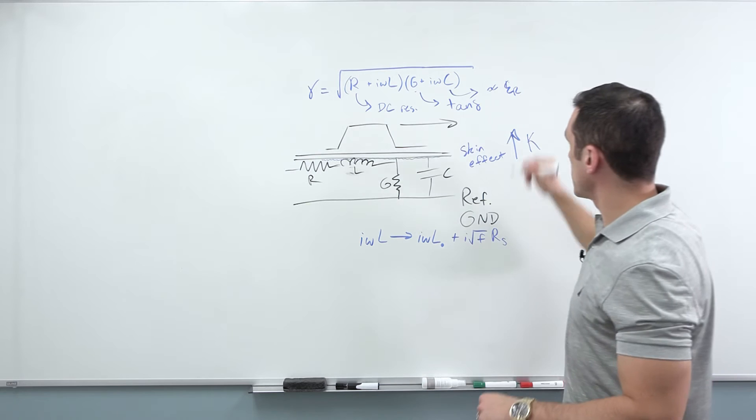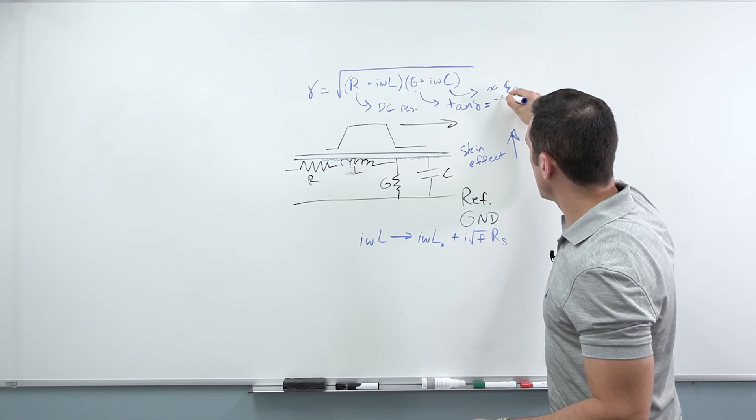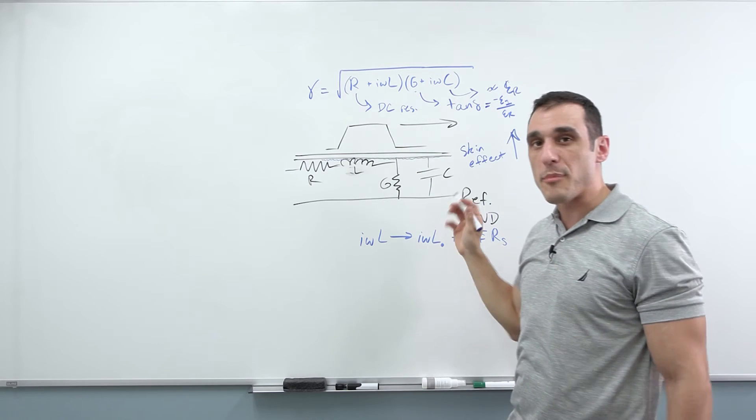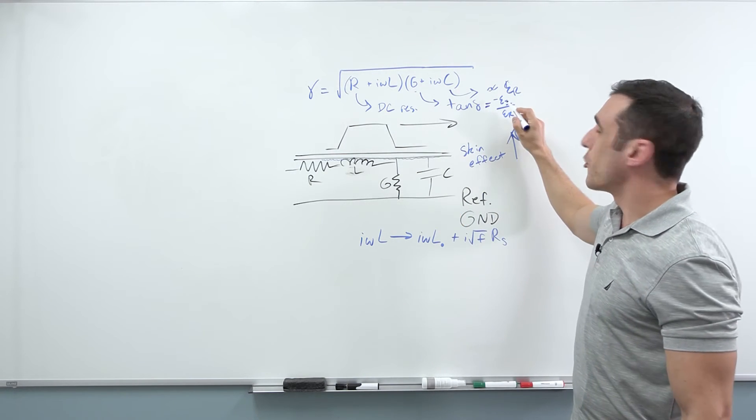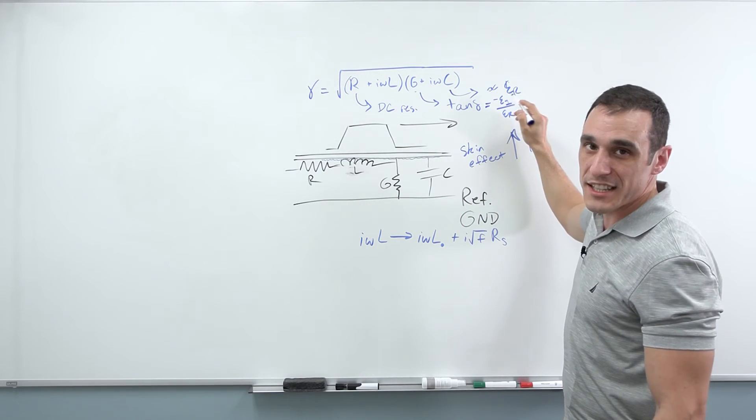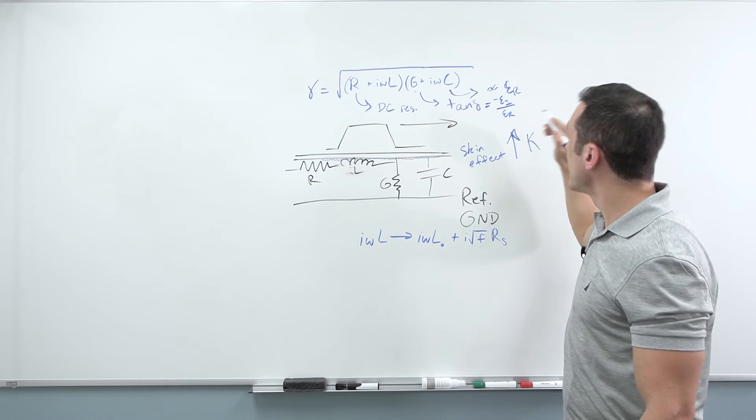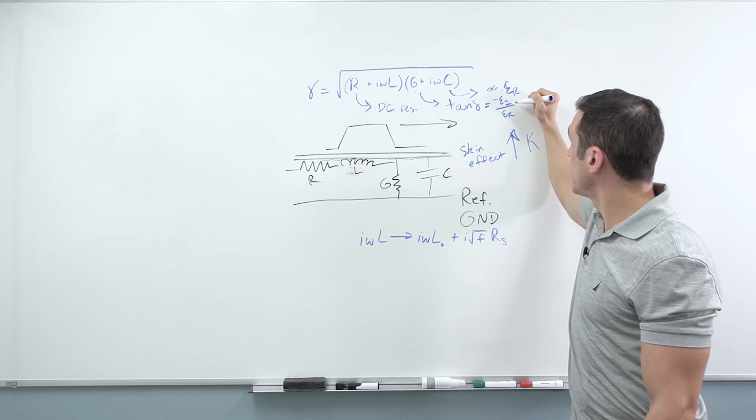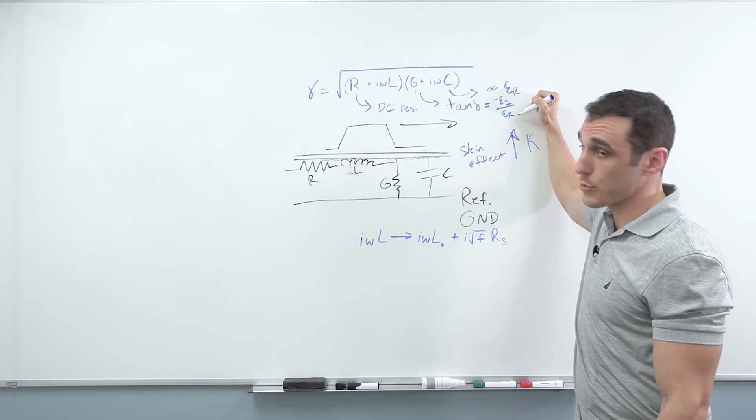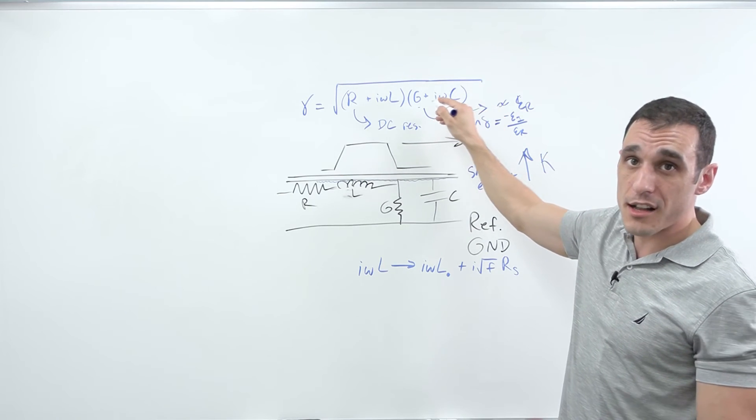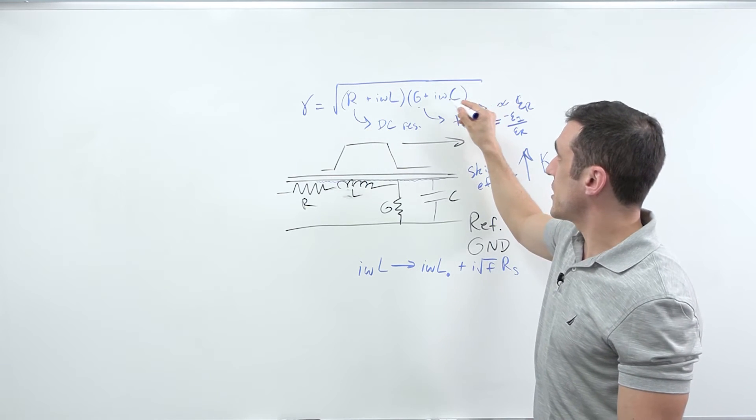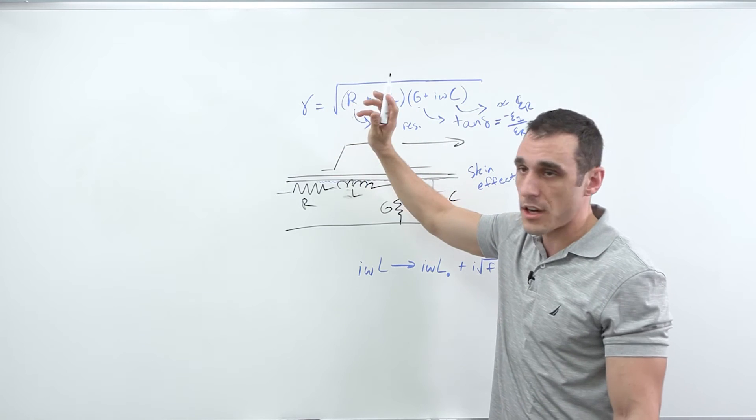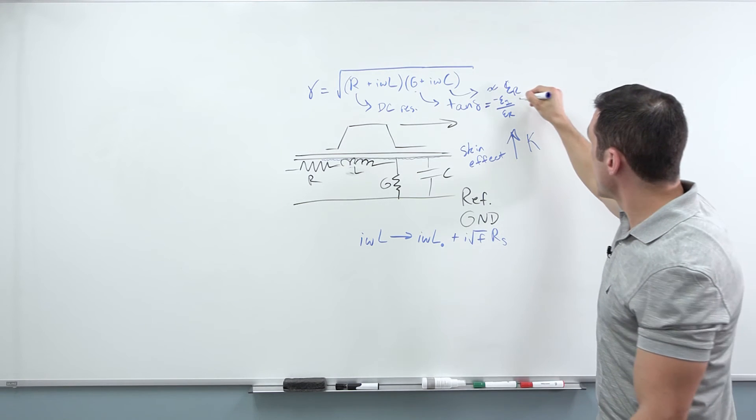So if you remember my previous video, I don't know why electrical engineers keep emitting this negative sign, but this negative sign has to be here. It is proportional to the negative of the imaginary part of the dielectric constant divided by the real part. So the dielectric constant, both parts of it appear inside this square root for the propagation constant.